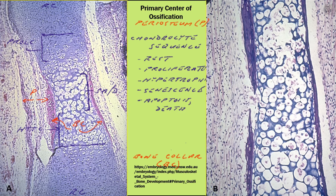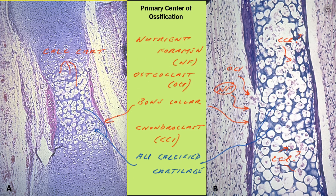The cartilage cells (RC) on either end are resting and adjacent matrix is uniform blue. Moving toward the center of the model, cells are in sequential stages of the growth plate: proliferating (PROL-CS), hypertrophying (HT-CCS), then senescence, apoptosis, and death (SAD). On either side of the middle of the model is red-stained woven bone — the bone collar (BC) — being formed by a thick multi-layered periosteum (P). The intact bone collar begins at the precise level of the hypertrophic cells. The adjacent cartilage matrix calcifies (CALC-CART) during the final stages of senescence and stains deeper blue toward the center.